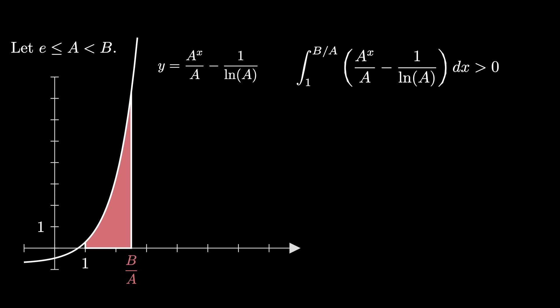When we apply the fundamental theorem of calculus to this definite integral, we see that a raised to the b over a divided by a times the natural log of a minus b divided by a times the natural log of a must be greater than 0. Because a times the natural log of a is a positive number since a is greater than or equal to e, we conclude that a to the b over a is greater than b.